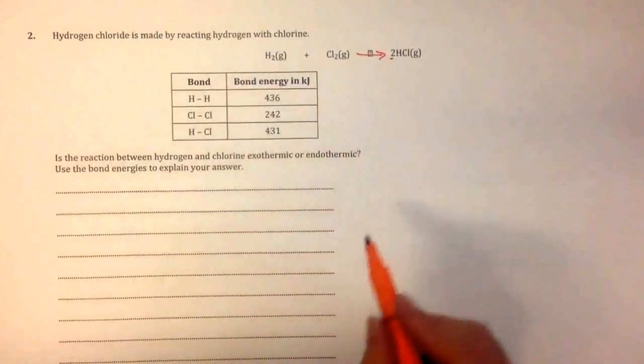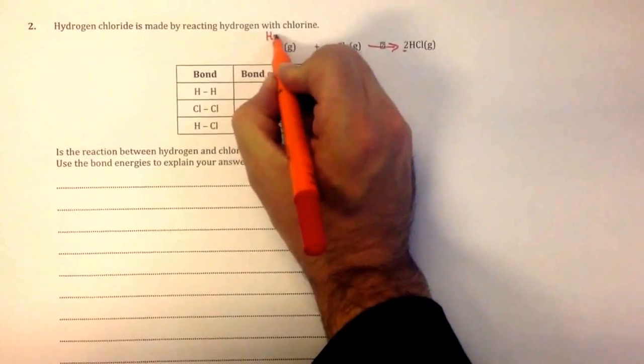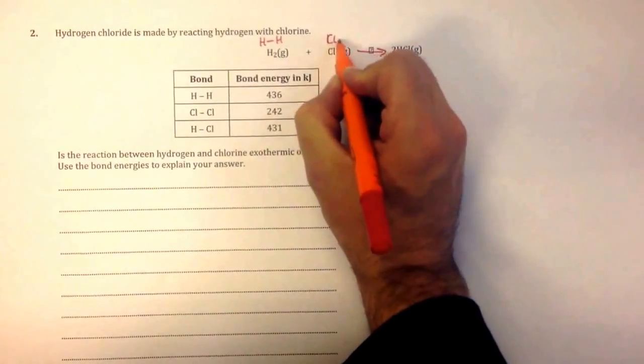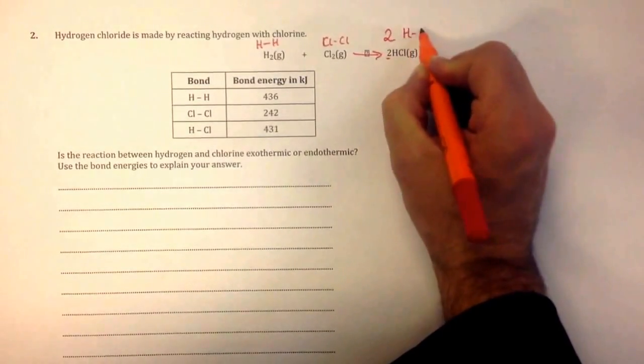When you're given this type of data, think about what it's asking. If we draw things out, we have hydrogen-hydrogen, chlorine-chlorine, then we have two HCls.